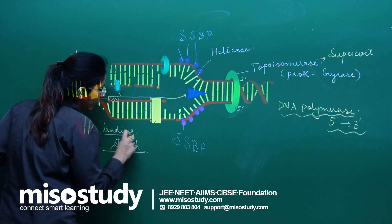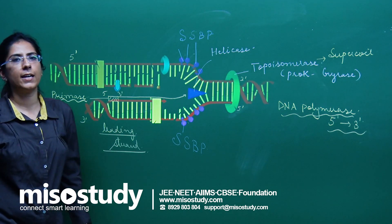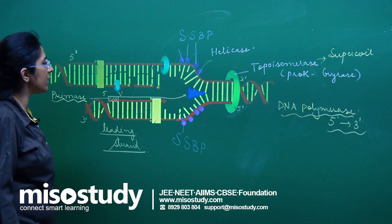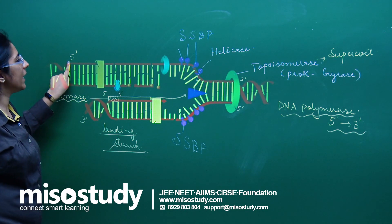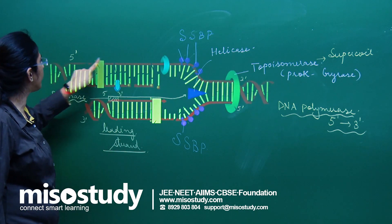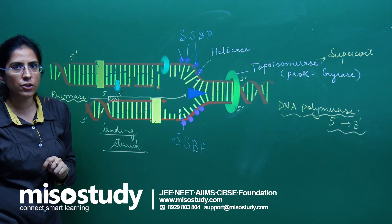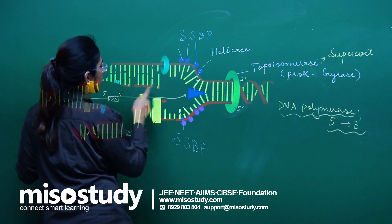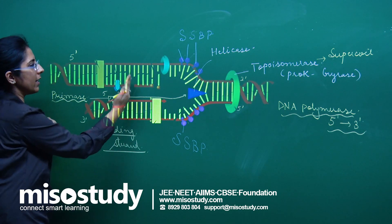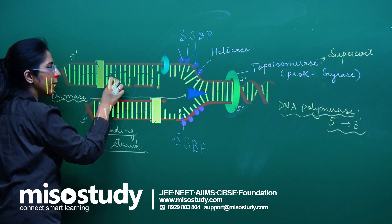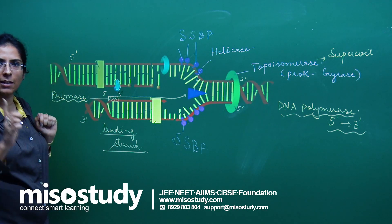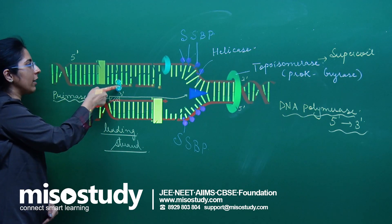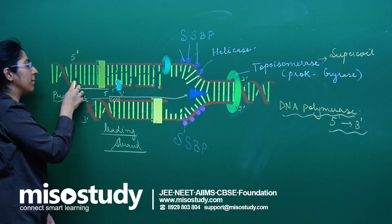The leading strand is also called the continuous strand. The second strand, called the lagging strand, is also termed the discontinuous strand. Because it runs in the 3′ to 5′ direction, DNA polymerase must move in the 5′ to 3′ direction. Primase comes first, followed by DNA polymerase, which extends in the 5′ to 3′ direction.